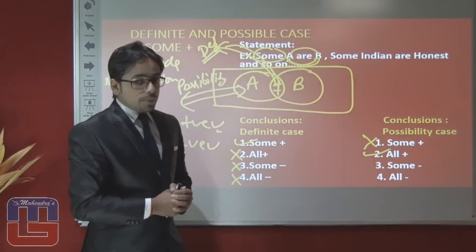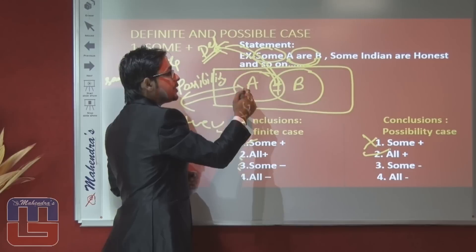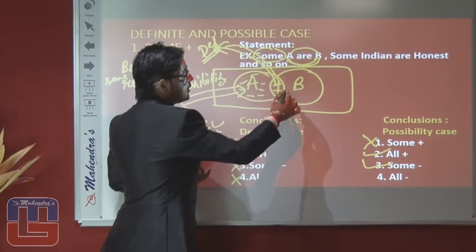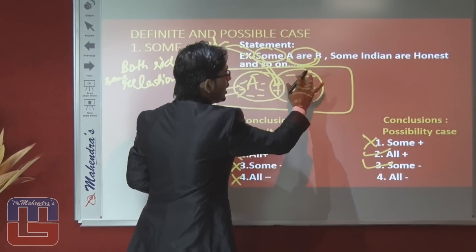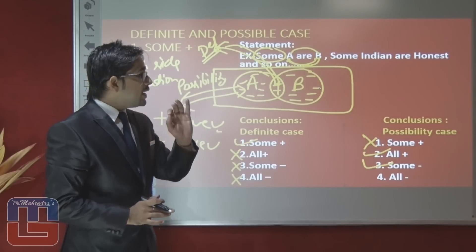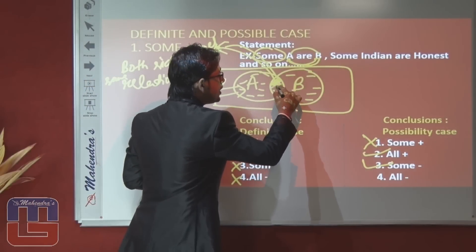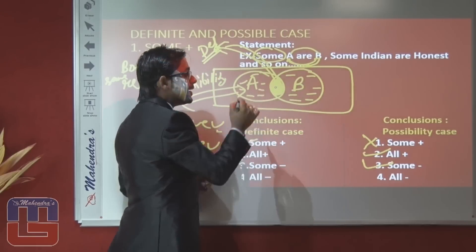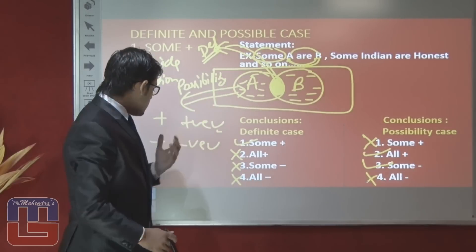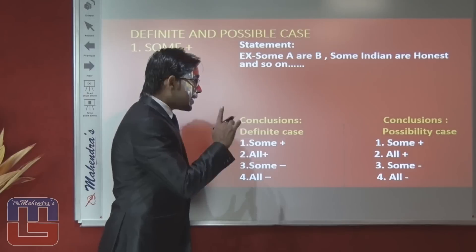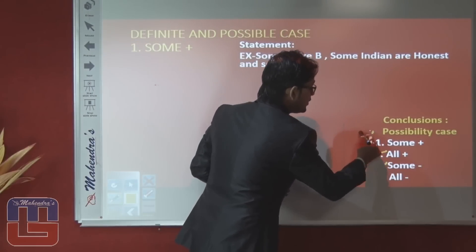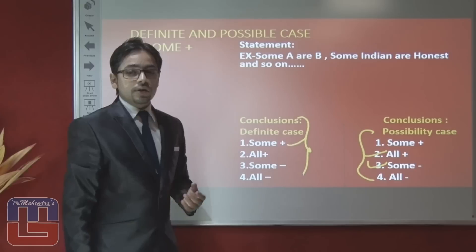Third conclusion: 'some A are not B is a possibility' — yes, this is true because if the rest of the part does not go in the area of B, then this conclusion is true. Vice versa, 'some B are not A is a possibility' can also be true. 'All A are not B is a possibility' — this cannot be a possibility because there is already some positive relation between A and B. So in some positive statements, only three conclusions per side can be true: some positive (definite), all positive (possible), and some negative (possible).